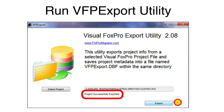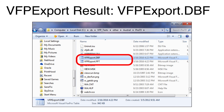After the project file has been processed, the project successfully exported text will be displayed. If there are missing file references, this info will be displayed and linked to a log file. Close the VFP export utility.